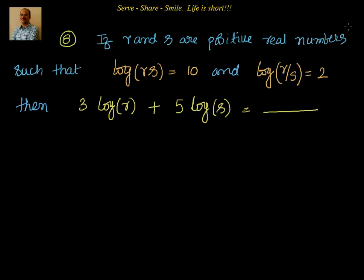Hello friends, welcome. Let's look at this problem. If r and s are positive real numbers such that log of rs equal to 10 and log of r by s equal to 2, then what is the value of 3 log r plus 5 log s?